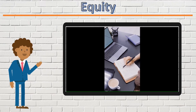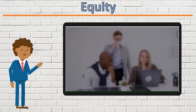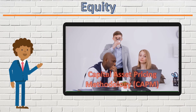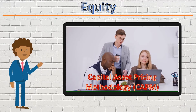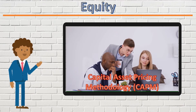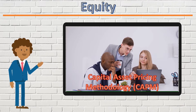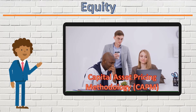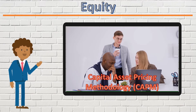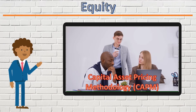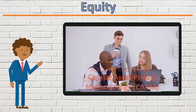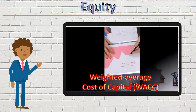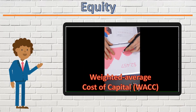In this chapter, we will learn a methodology for estimating the cost of equity funding on a company's balance sheet, called the Capital Asset Pricing Methodology, or CAPM. We will then use the CAPM, along with the cost of debt facilities on a company's balance sheet, in order to calculate the total cost of the company's overall funding structure, the Weighted Average Cost of Capital, or WACC.